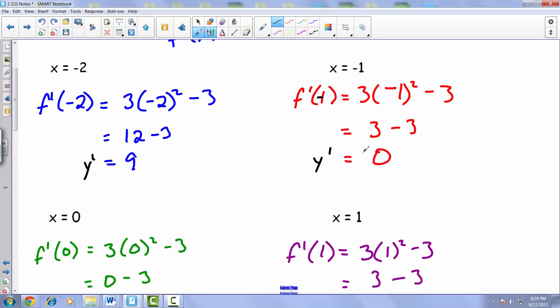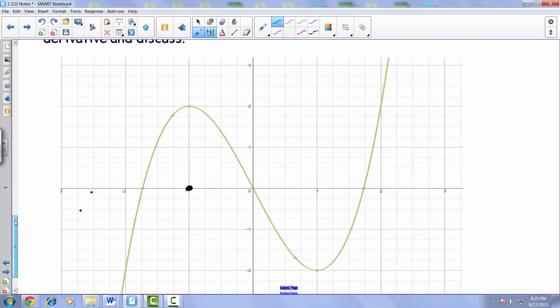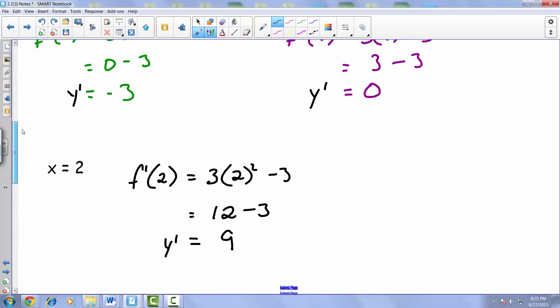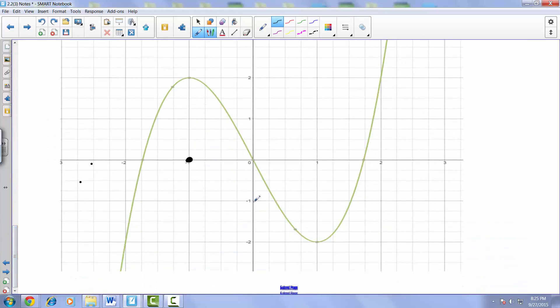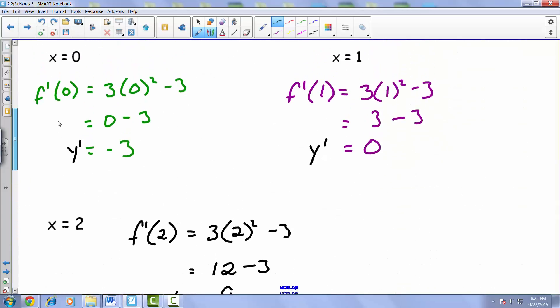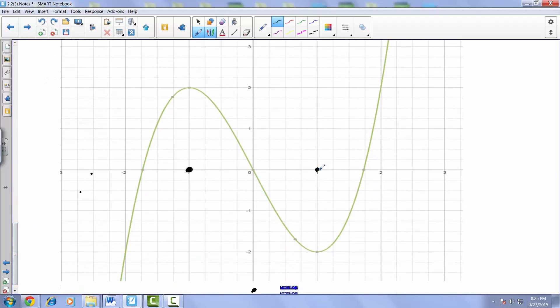So at negative 1 we had a point at 0. At 0 we ended up with y prime, that slope of the tangent coming out to be negative 3. So that would be about here. Then at 1 we saw it came out to be 0.